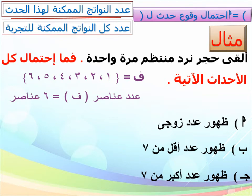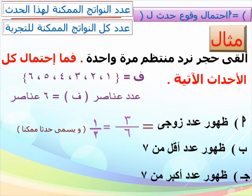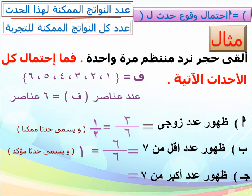ظهور عدد زوجي: الأعداد الزوجية هي 2، 4، 6 - إذن الاحتمال = 3/6 = 1/2، وده حدث ممكن. ظهور عدد أقل من سبعة: جميع الأعداد الستة أقل من سبعة، إذن الاحتمال = 6/6 = 1، وده حدث مؤكد. ظهور عدد أكبر من سبعة: لا يوجد عدد أكبر من 6 في المجموعة، إذن الاحتمال = 0/6 = 0، وده حدث مستحيل.